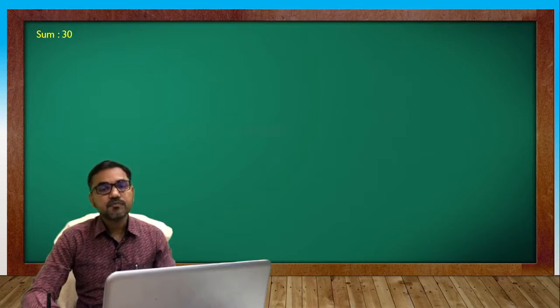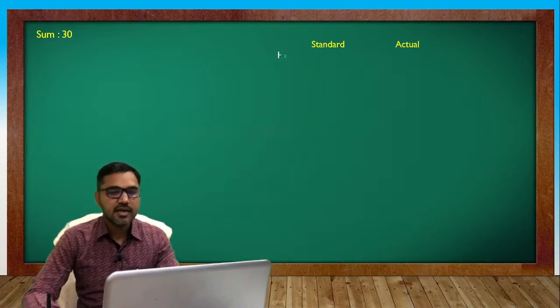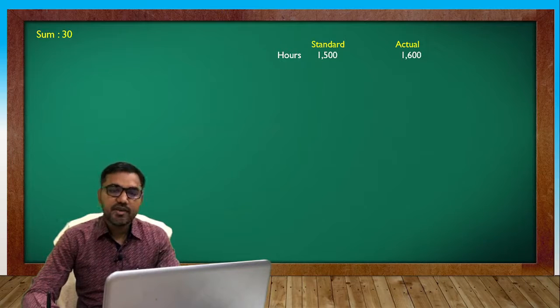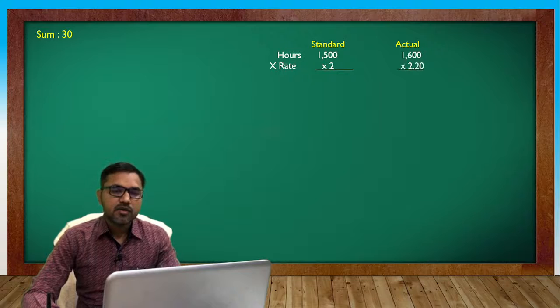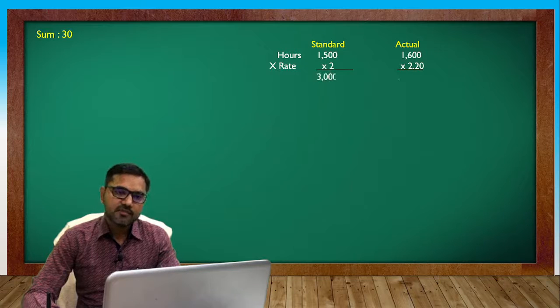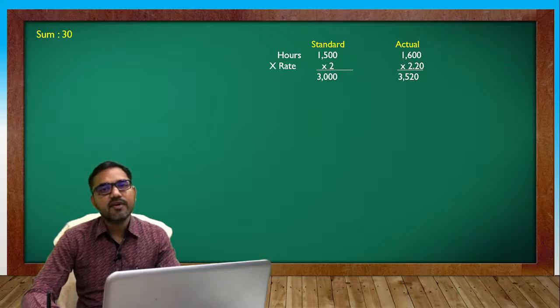Standard and actual hours: 1500 standard, 1600 actual. Actual rate 2.20. So we get 3000 and 3520.